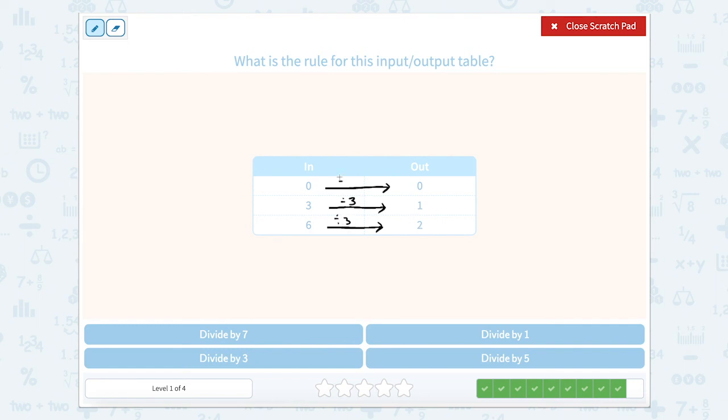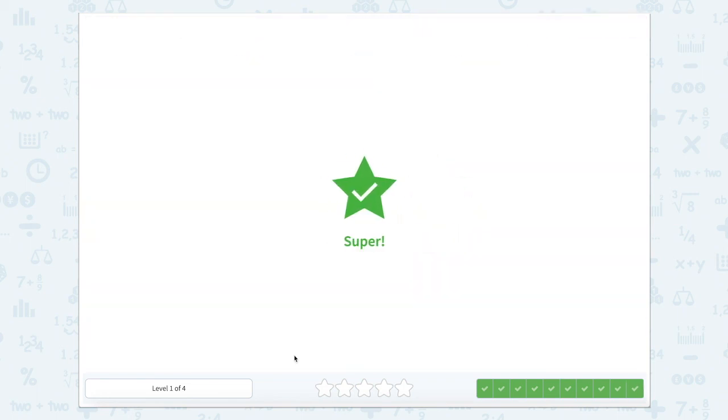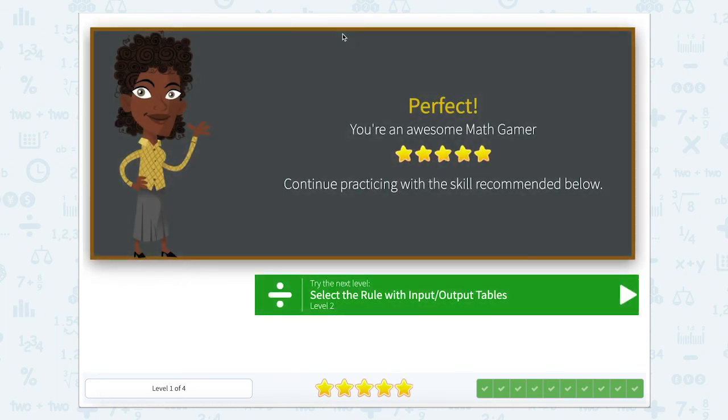Well, that's right. So 0 divided by 3 also equals 0. So divided by 3. Great job selecting the rule for our input-output tables today.